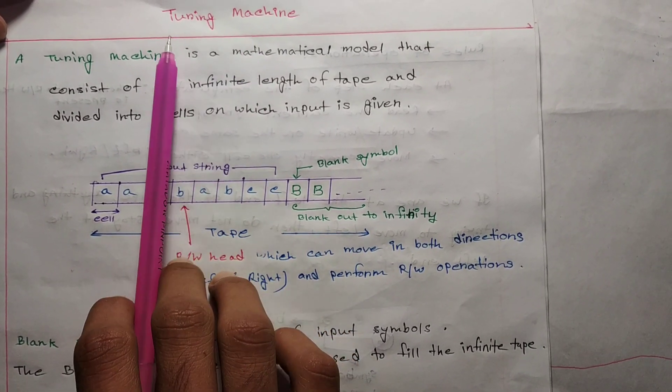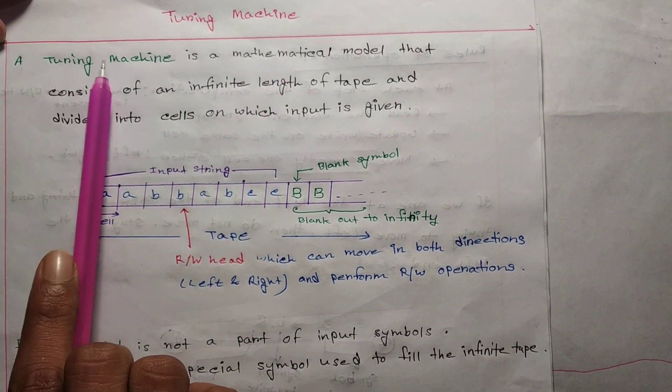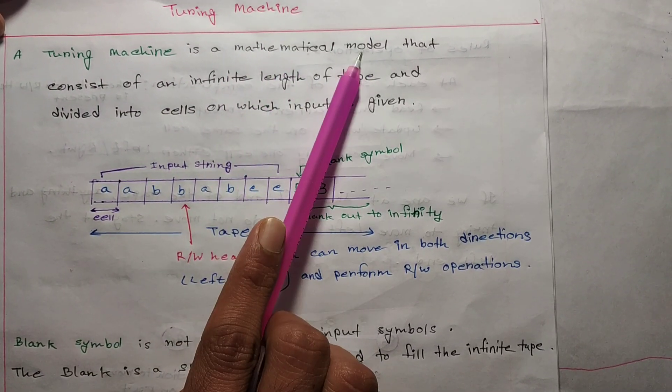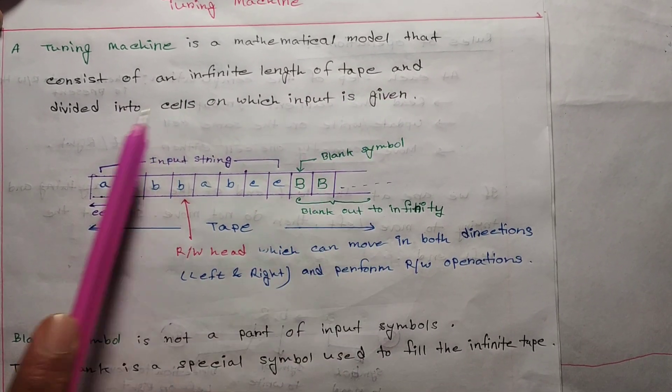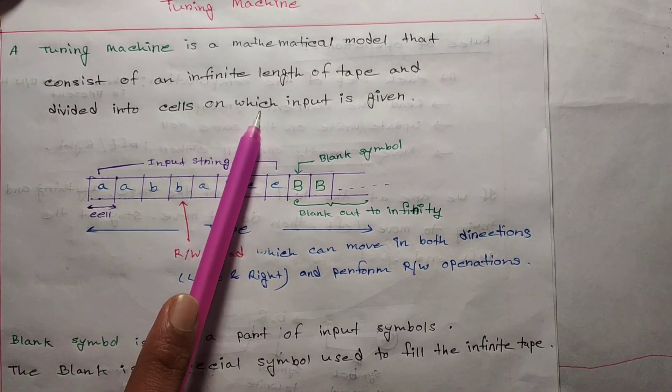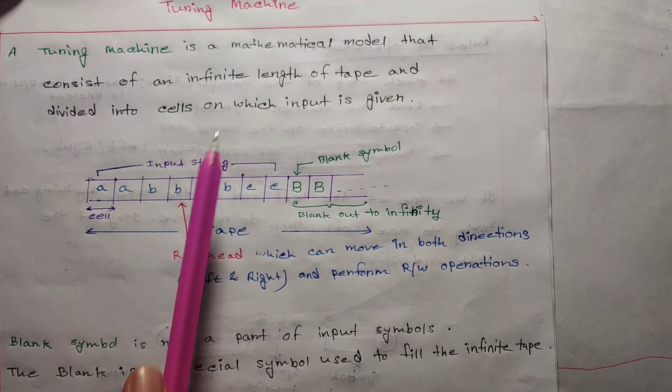So first, let me tell actually what is Turing machine. A Turing machine is a mathematical model that consists of an infinite length of tape divided into cells on which input is given.